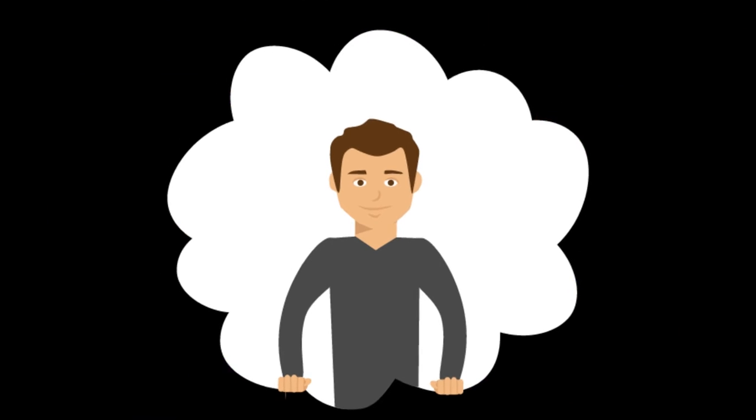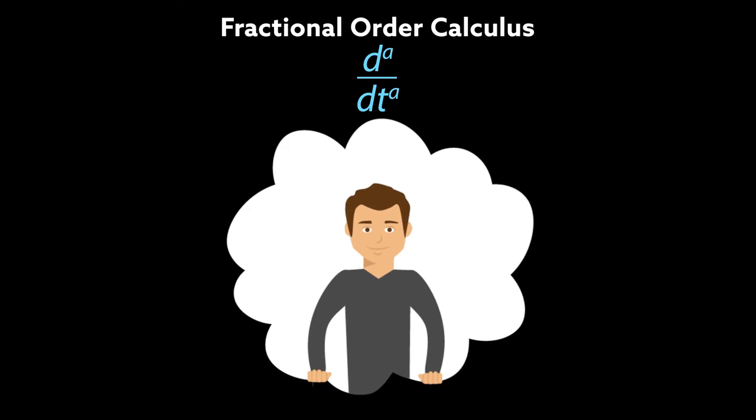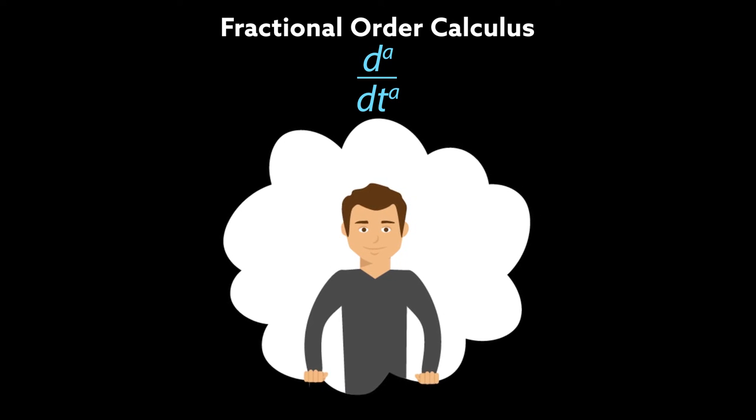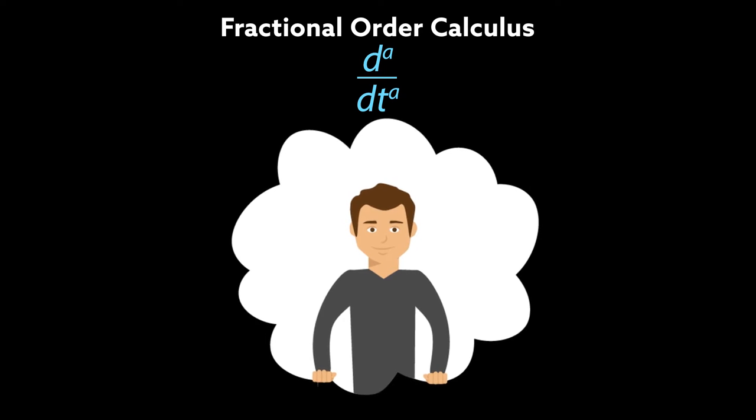Now, researchers are turning to a branch of mathematics called fractional order calculus to translate our unique behavior into terms machines can easily understand, helping them operate more efficiently and more reliably.